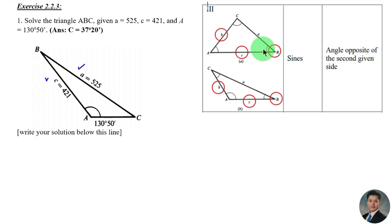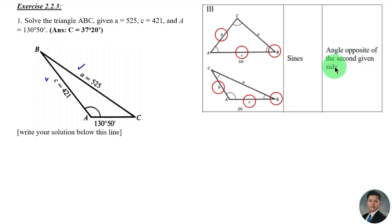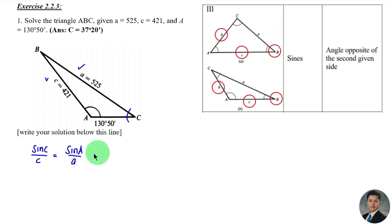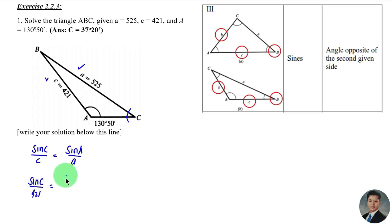Recalling Case 3: we are going to use the Law of Sines. The first part we solve is the angle opposite the second given side. Using the sine law: sin C / c = sin A / a. So sin C / 421 = sin 130 degrees 51 minutes / 525.